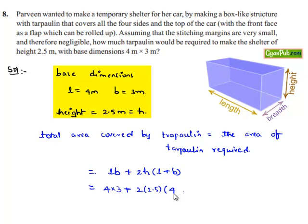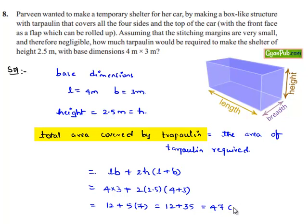This equals 4 × 3 = 12, plus 2 × 2.5 = 5, times 4 + 3 = 7, which equals 12 + 5 × 7 = 12 + 35 = 47 square meters. Therefore, the area of tarpaulin required to make the shelter is 47 m².